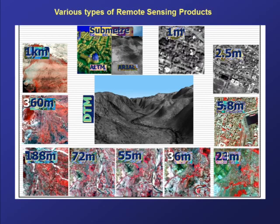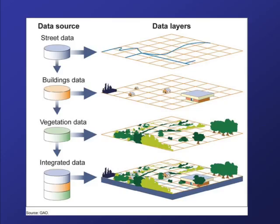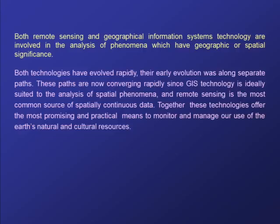Satellite images are in different resolutions — all are linear satellite products which we will discuss in further videos. The next is Geographic Information System, commonly known as GIS. It is a combination of hardware and software systems which are designed to capture, store, manipulate and display spatial information and related attributes. This is the common process of how to store different layers in GIS. Both remote sensing and GIS technology are involved in the analysis of phenomena which have geographically specific significance.